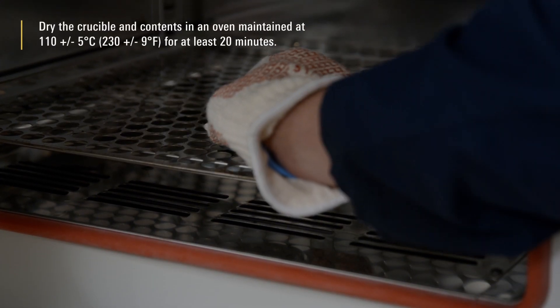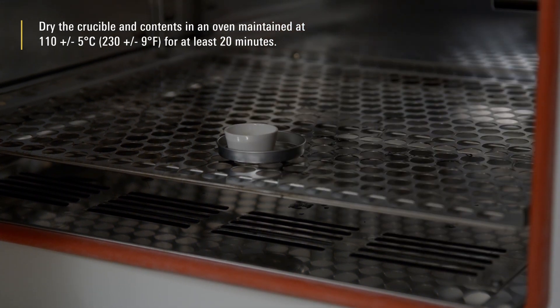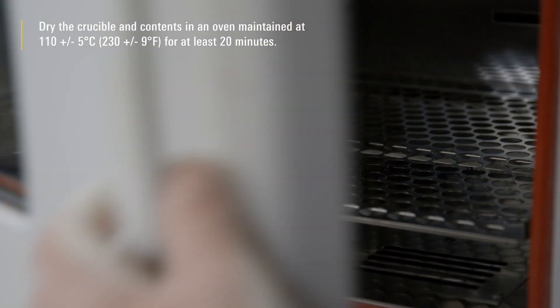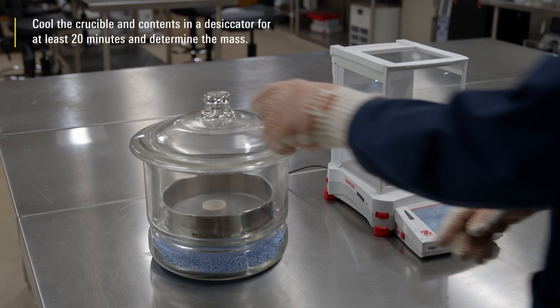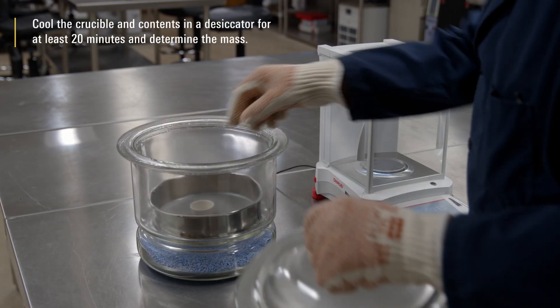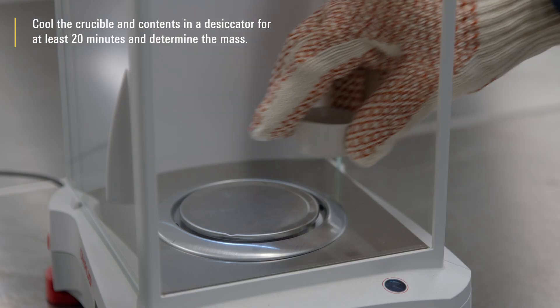Dry the crucible and contents in an oven maintained at 110±5 degrees Celsius for at least 20 minutes. Cool the crucible and contents in a desiccator for at least 20 minutes and determine the mass.